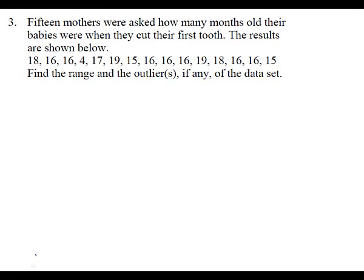It says 15 mothers were asked how many months old their babies were when they cut their first tooth. The results are shown below. It wants us to find the range and the outliers, if any. Outlier — in theory we should calculate the standard deviation and look for the one that's more than two away — but looking at that data, which piece doesn't fit? Four. That's got to be your outlier. So your outliers aren't going to be super difficult to find.